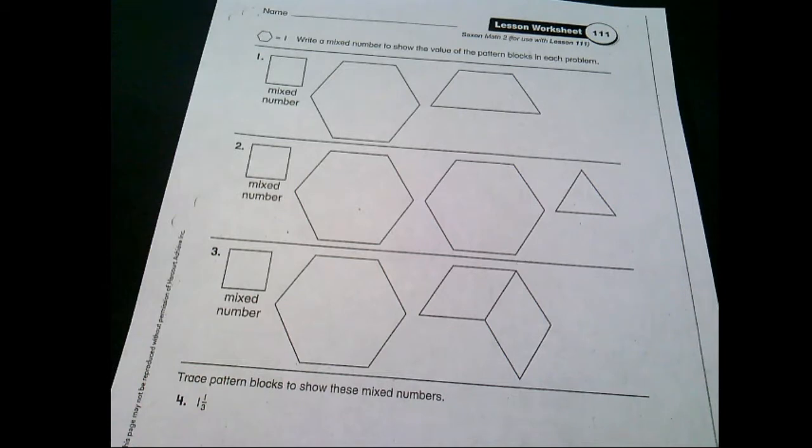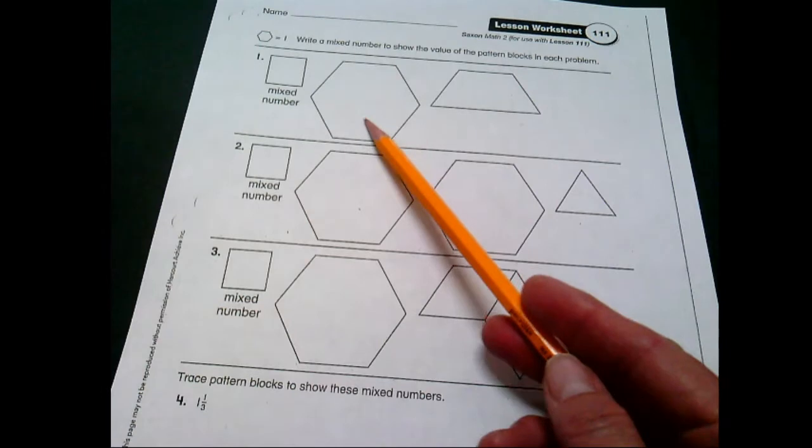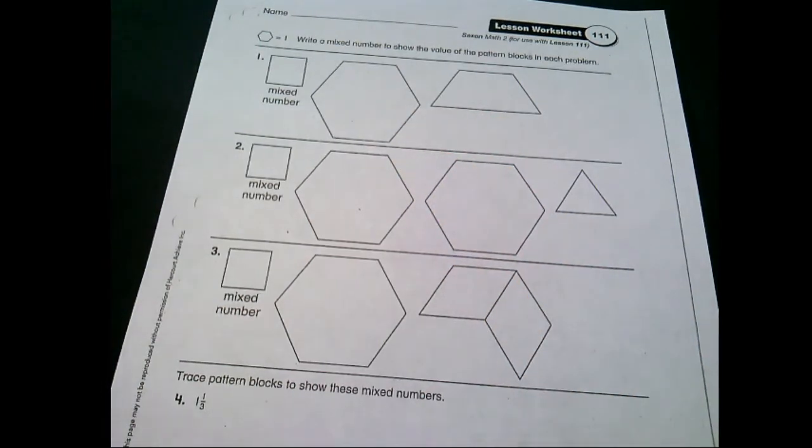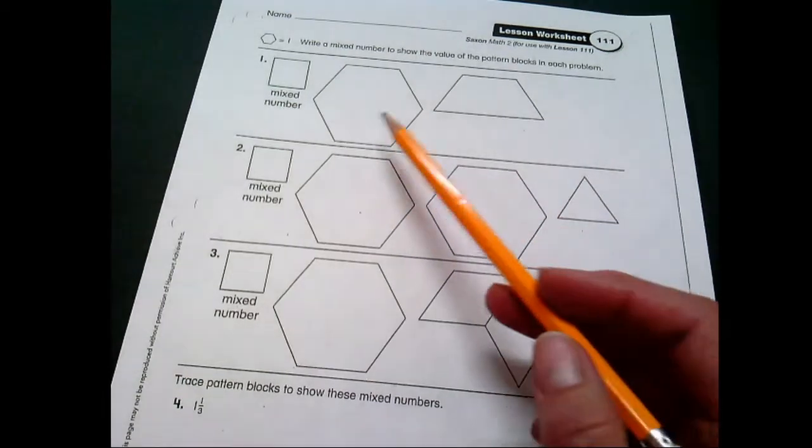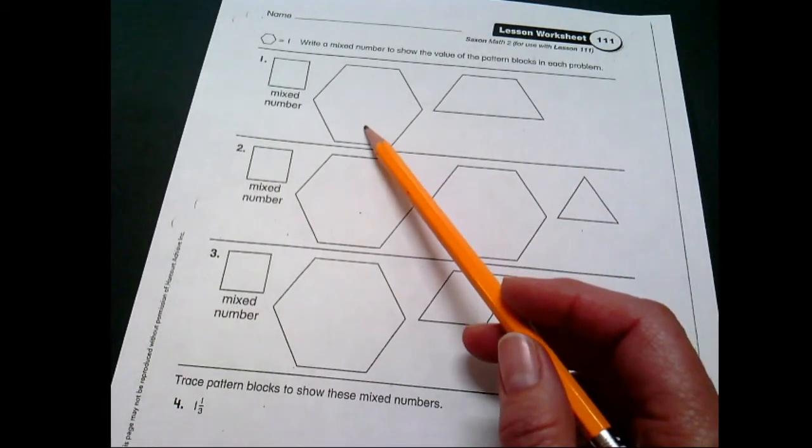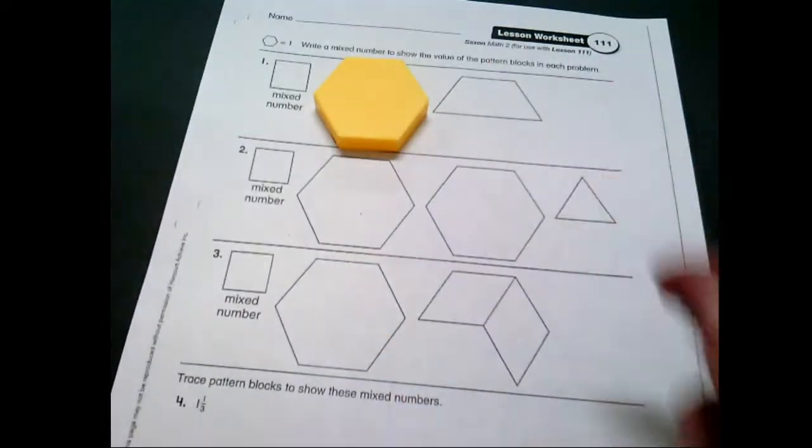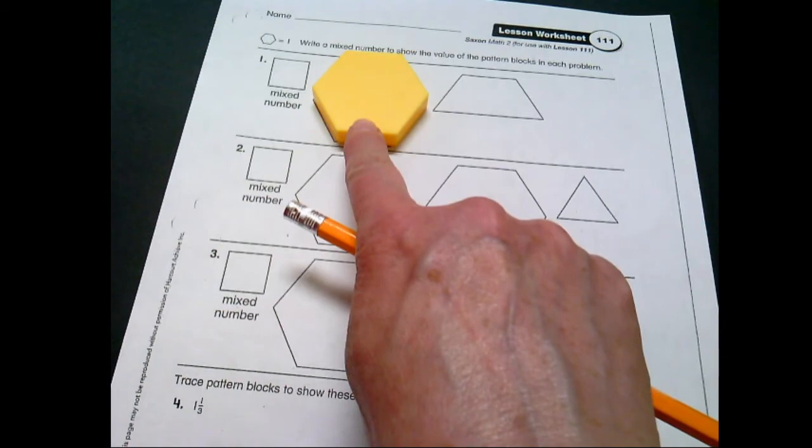Guess what? You guys have been doing that already. Think about when you measure your line segments and sometimes your line segments are, let's say, one and one half inches or three and one half inches. That's a mixed number, so you're already writing those. Now today we're going to look at pattern blocks and writing the fraction for pattern blocks in a mixed number. And we're going to have our hexagon be one, okay? So if you think about that hexagon there, that is worth one.